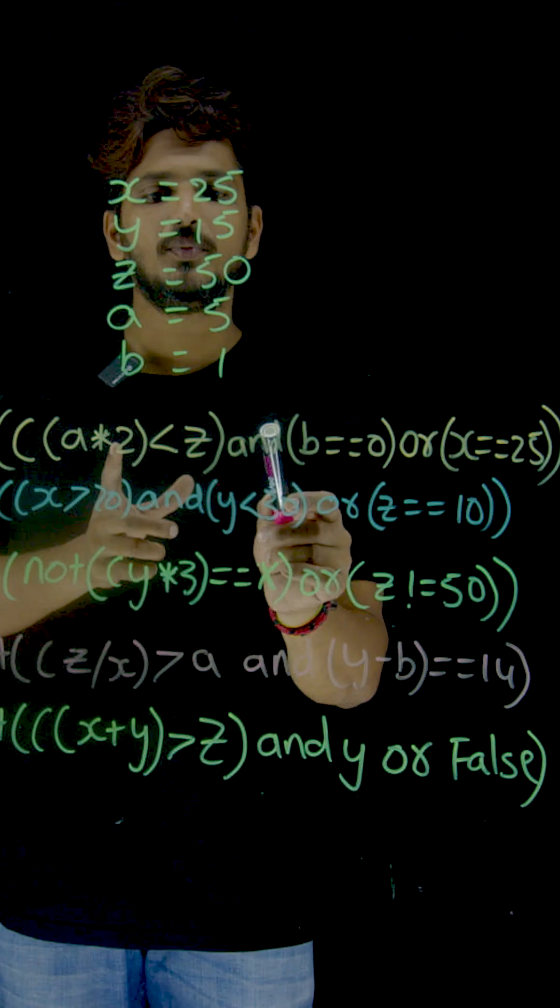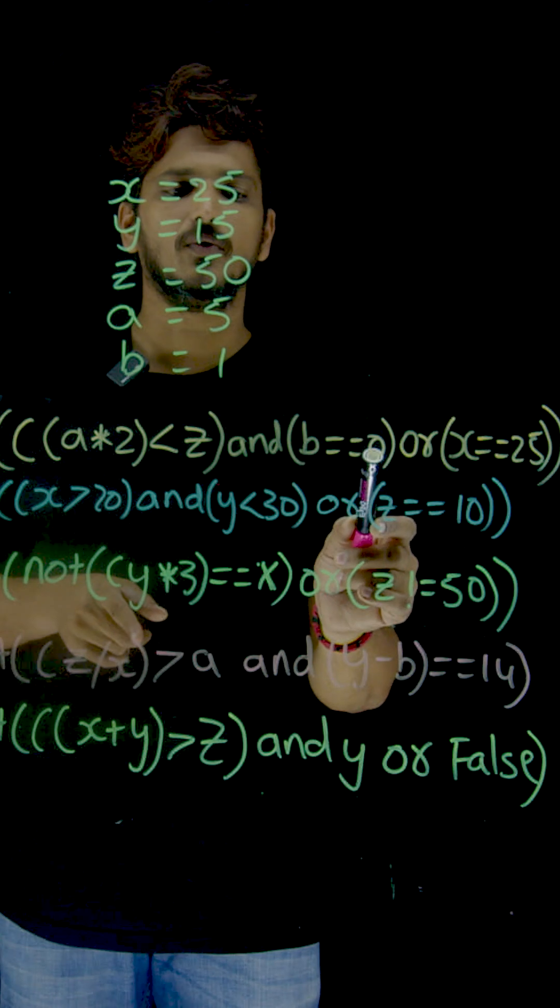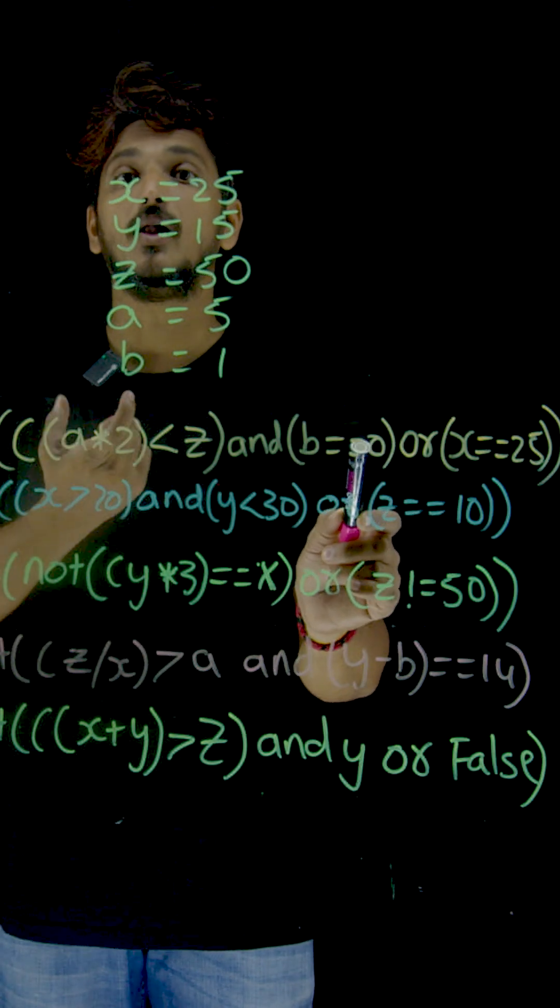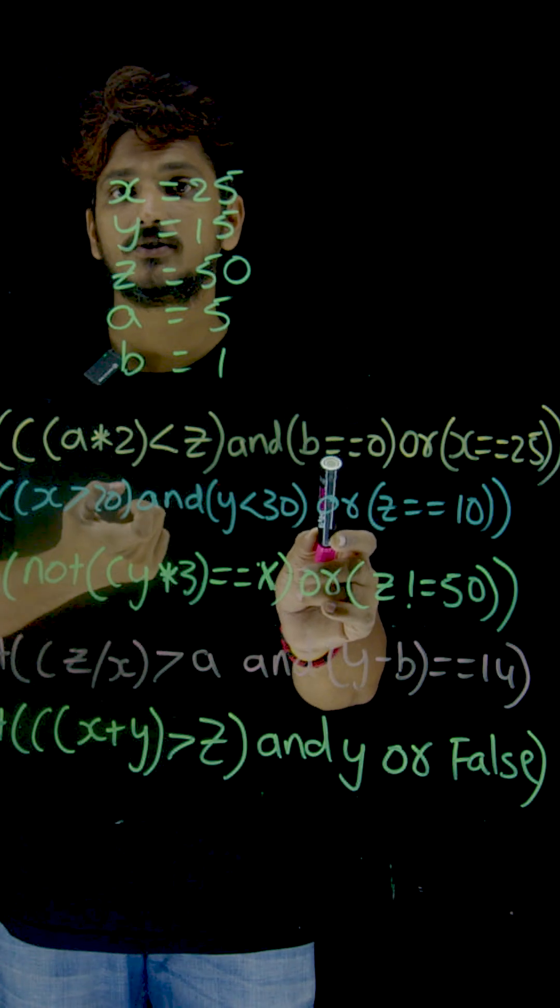Now this is going to be AND with b equal to 0. What is b? 1. 1 equal to 0, false. True and false, you are going to get false.